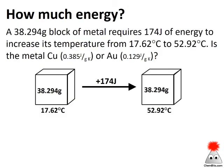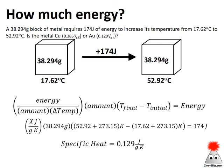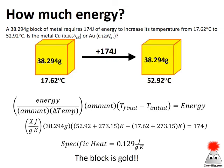Finally, what if the specific heat itself is unknown? A 38 gram block of some metal has 174 joules of energy added to it, increasing its temperature from 17.62 to 52.92 degrees Celsius. Is it copper (specific heat 0.385 J/g·K) or gold (0.129 J/g·K)? Plugging in the known mass, temperature change in Kelvin, and energy, and solving for x gives a specific heat of 0.129 joules per gram Kelvin — the block is gold.